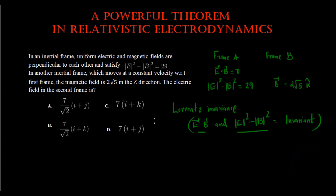Since E dot B equals zero in frame A, by Lorentz invariance, E prime dot B prime in frame B is also zero. Given that the magnetic field B prime is 2 root 5 k-cap in frame B, if we assume the electric field E prime to be E_x' i-cap plus E_y' j-cap plus E_z' k-cap,